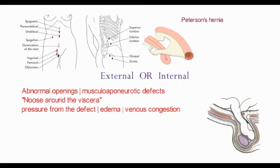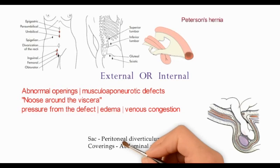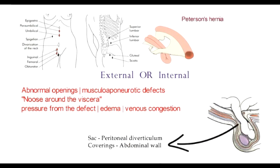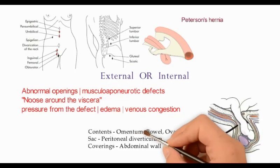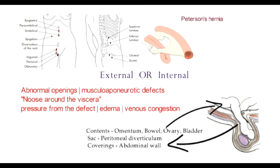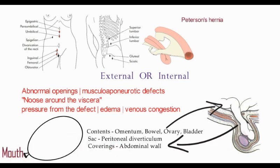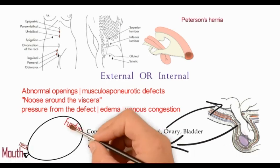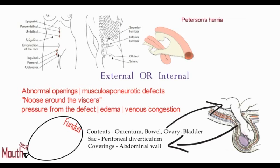A hernia has three parts: the peritoneal diverticulum or sac, the coverings of the sac from the abdominal wall, and the contents — omentum, bowel, etc. The opening of the sac is the mouth, the narrowest portion is the neck, the largest part is the fundus, and the whole sac is its body.